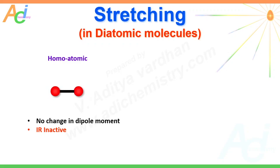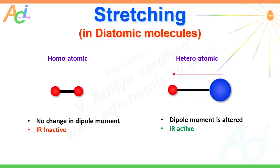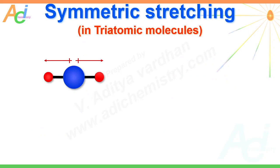Other examples are dihydrogen, dioxygen, dinitrogen, etc. Now look at a heterodiatomic molecule. Consider that the smaller atom is more electronegative than the larger one, hence there is a dipole moment for this molecule. The negative end is directed towards the more electronegative smaller atom, and upon stretching the dipole moment is altered, hence this stretching vibration is IR active.